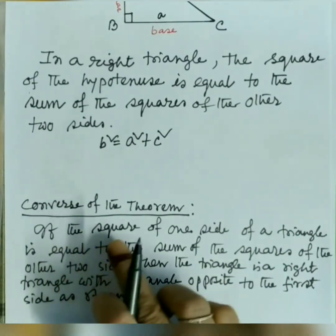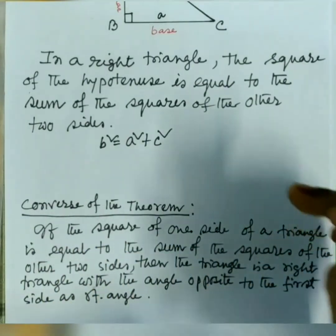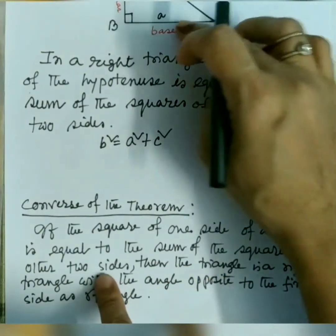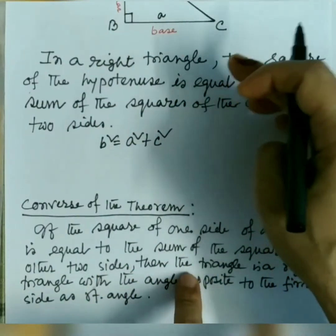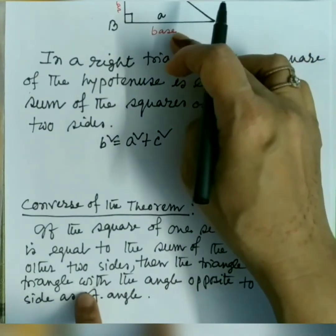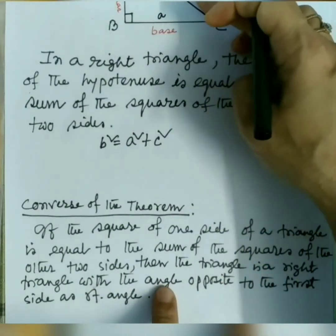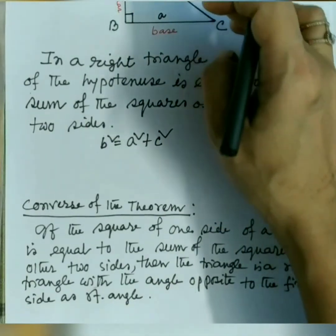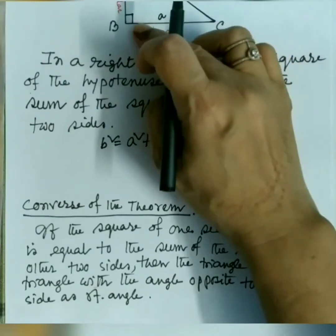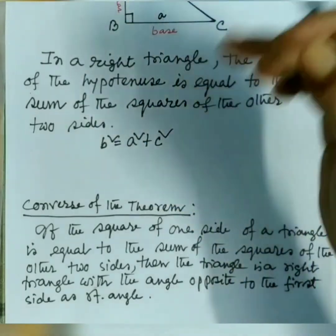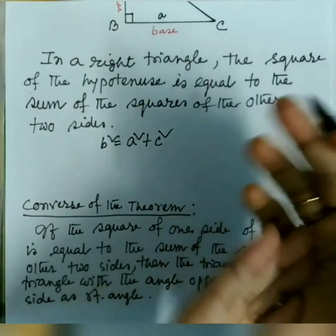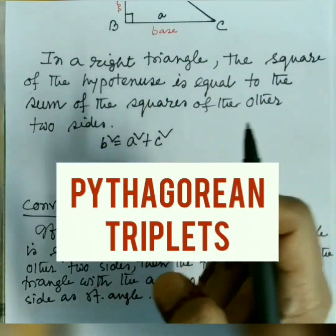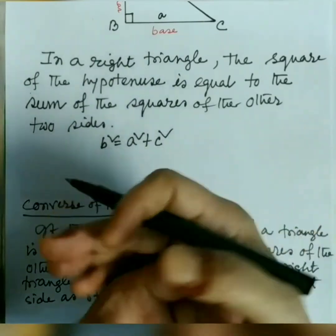The converse of the theorem is also true: if the square of one side of a triangle is equal to the sum of the squares of the other two sides, then the triangle is a right triangle with the right angle opposite to that first side. The values a, b, and c satisfying this are called a Pythagorean triplet.